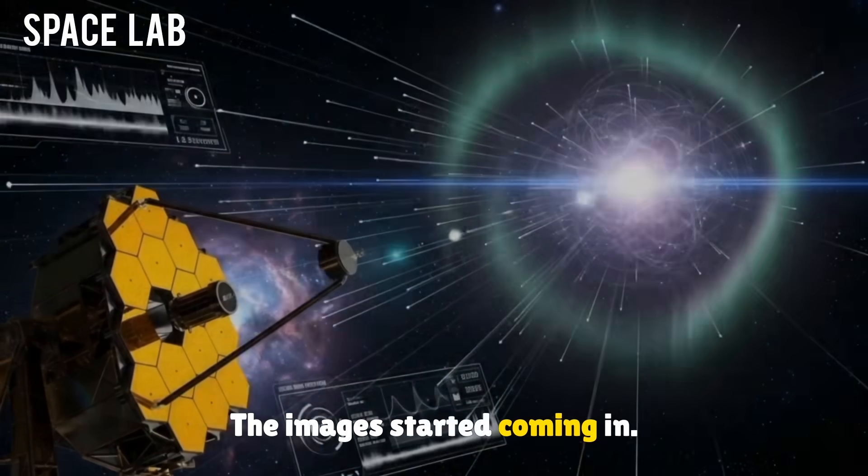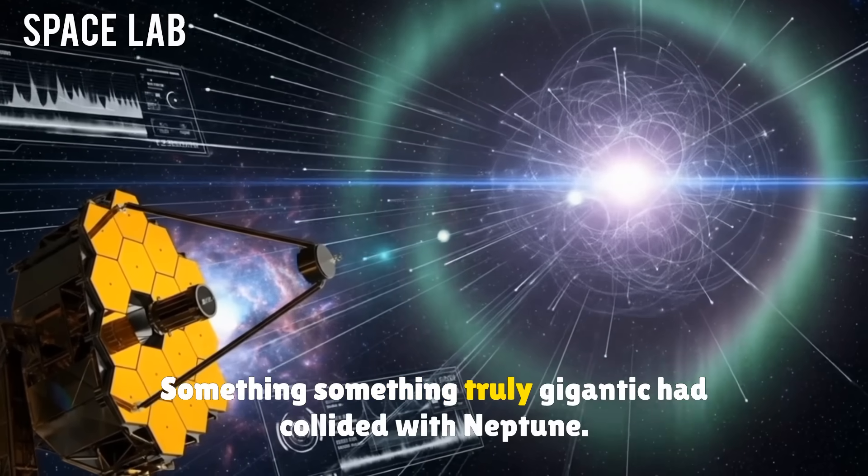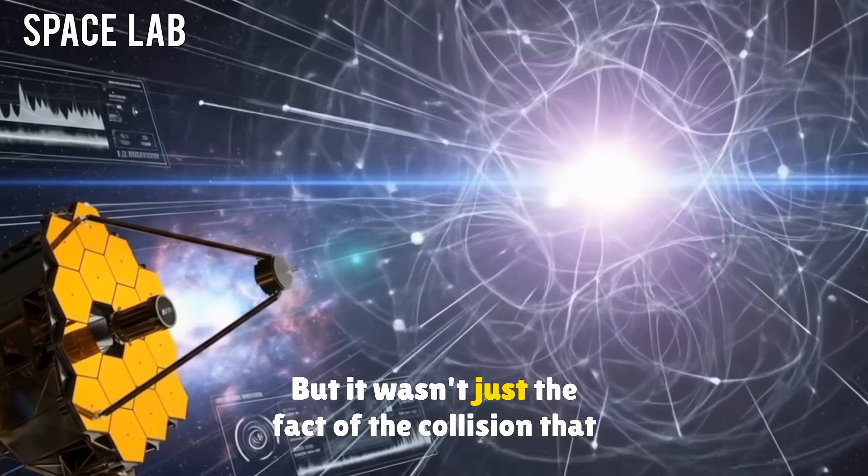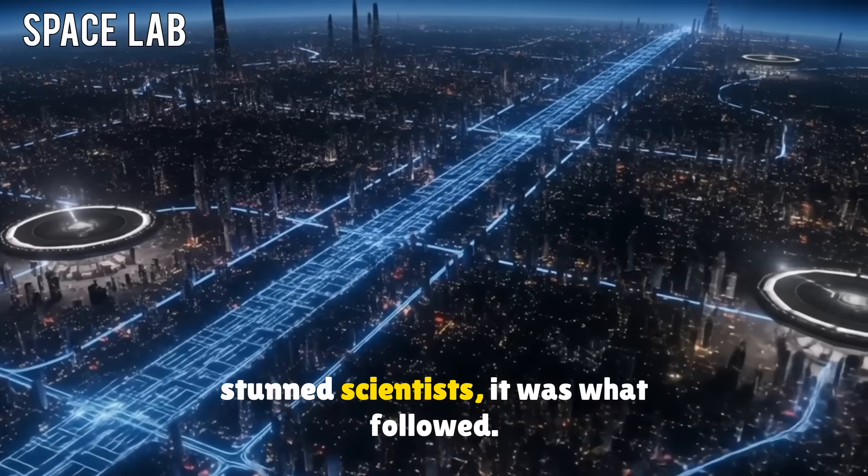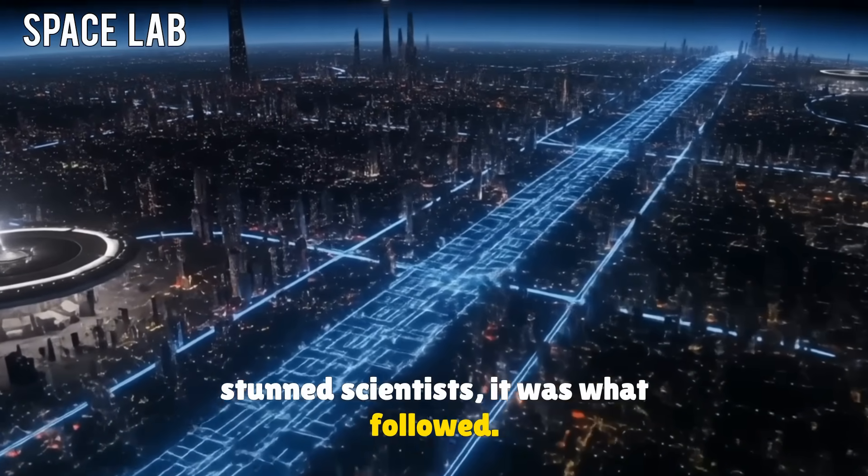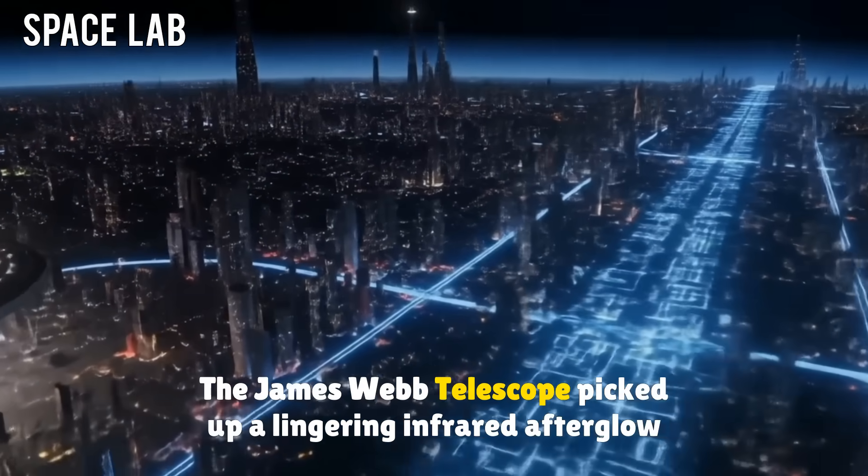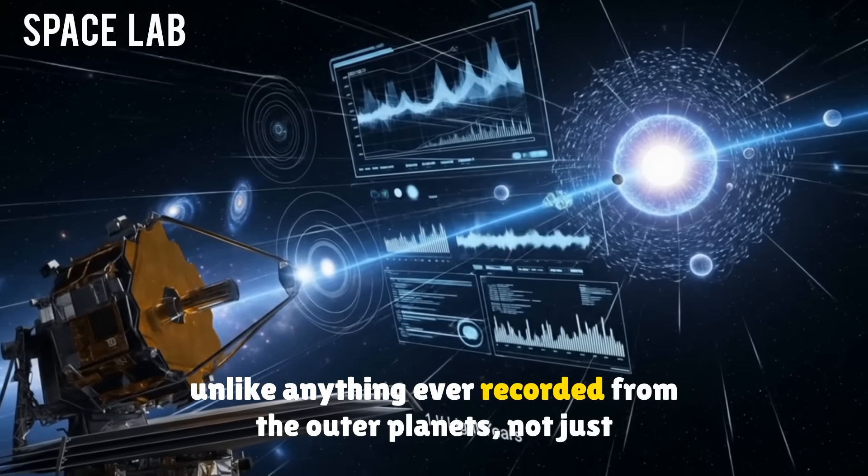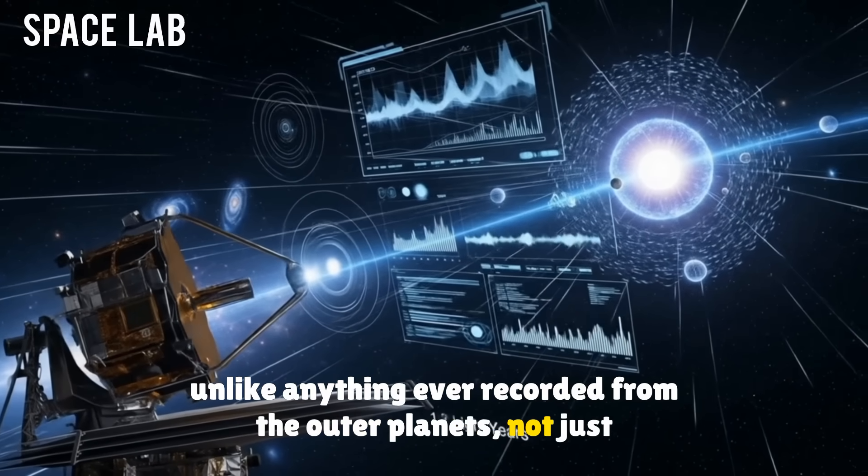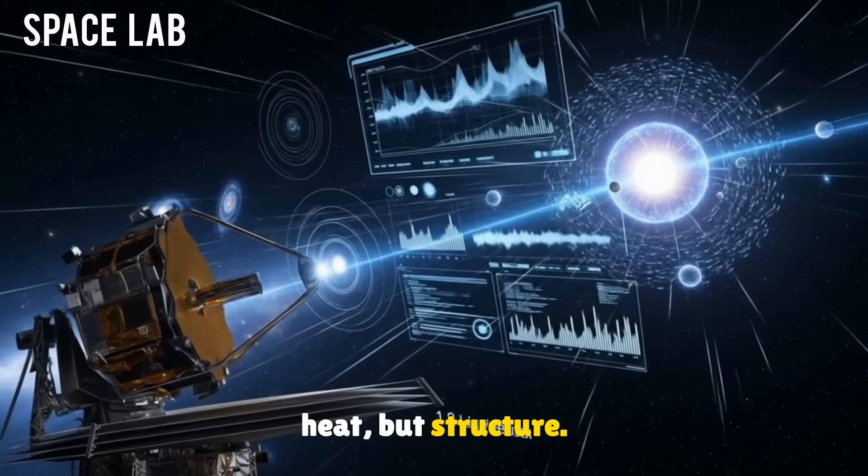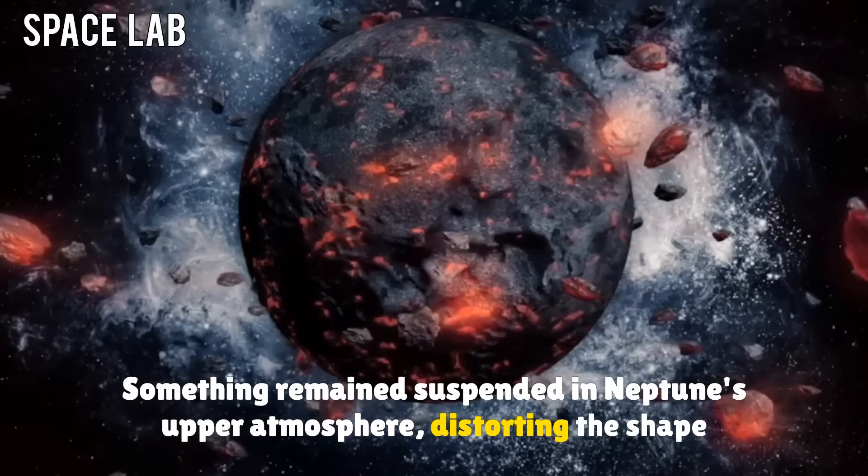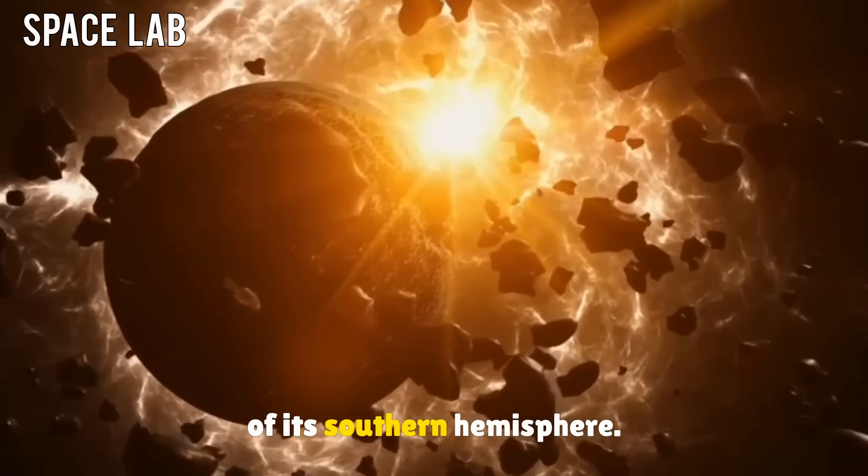The images started coming in. Something truly gigantic had collided with Neptune. But it wasn't just the fact of the collision that stunned scientists. It was what followed. The James Webb telescope picked up a lingering infrared afterglow, unlike anything ever recorded from the outer planets. Not just heat, but structure. Something remained suspended in Neptune's upper atmosphere, distorting the shape of its southern hemisphere.